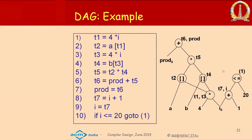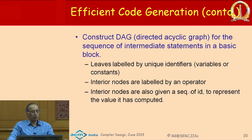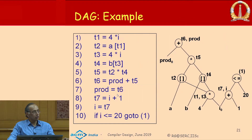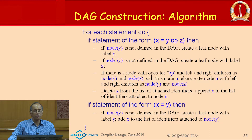This is what we mean by a DAG. Leaves are labeled by unique identifiers — variables or constants — and interior nodes are labeled by an operator. We are going to give a sequence ID to each node, which tells us in what order to compute them. First let us see how to construct the DAG, then we will discuss how to assign the sequence IDs.